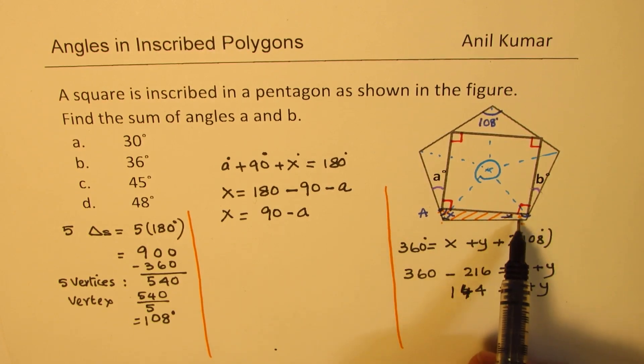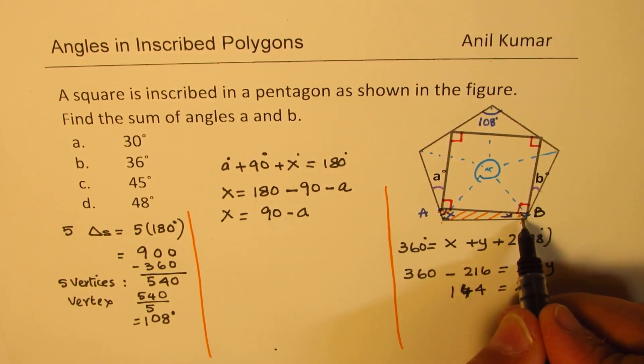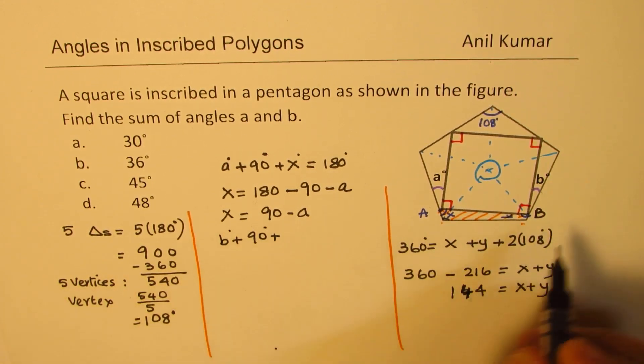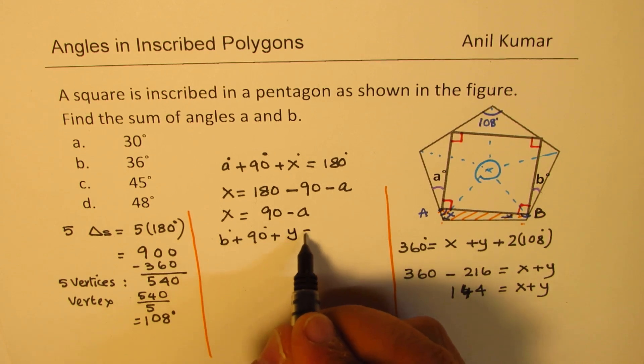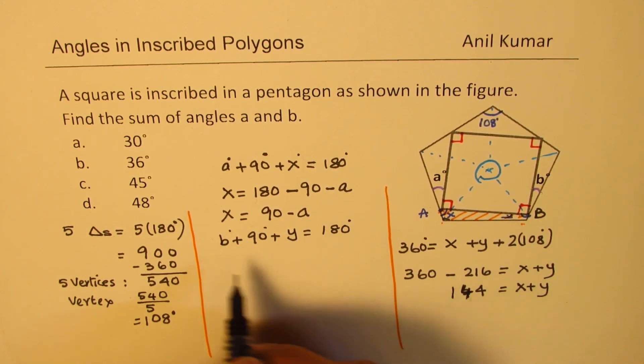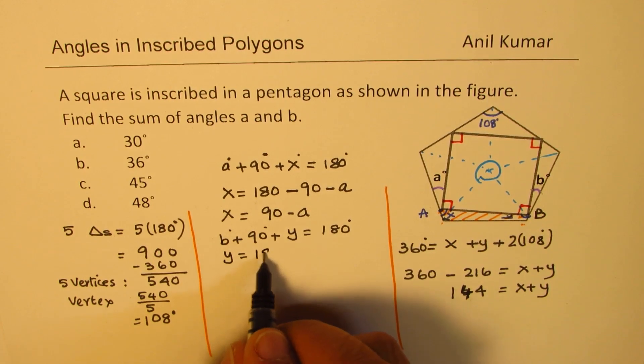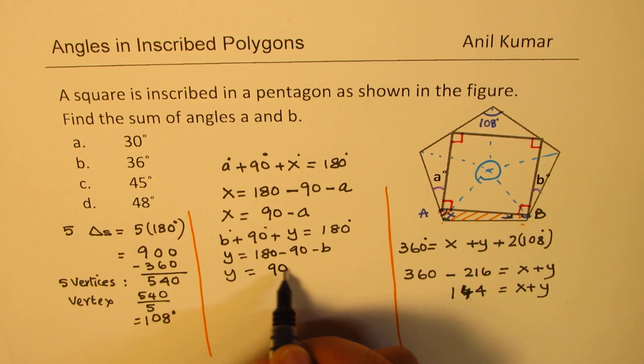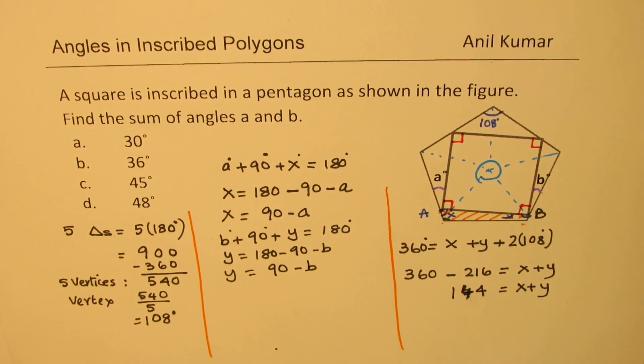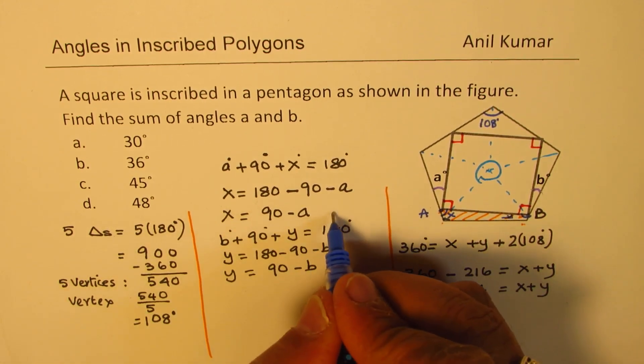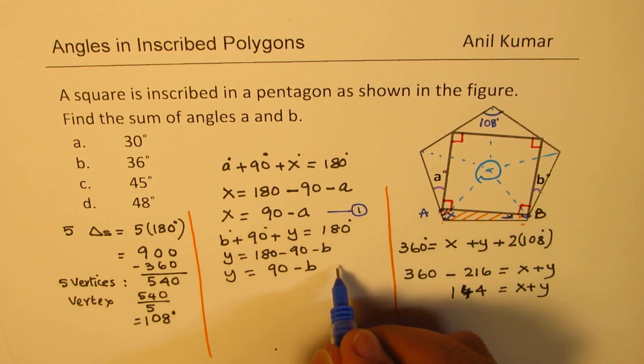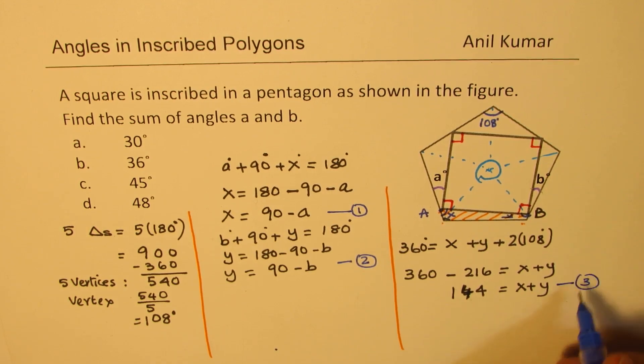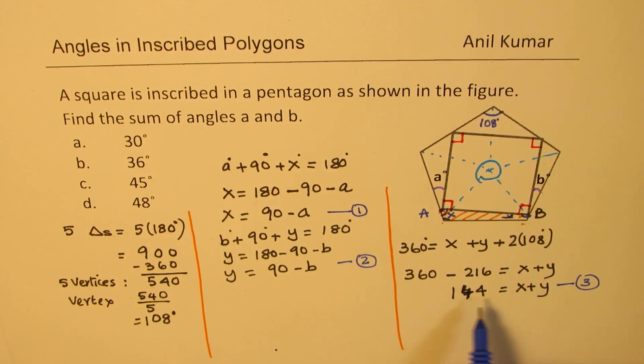Similarly, we can work on the other side, let's say point B. Now at this side, sum of B plus 90 degrees plus Y is also equals to 180 degrees. So from here we get Y equals 180 minus 90 minus B. So Y equals 90 minus B. Is that clear? So what we get here is a relation for X and Y in terms of A and B. And here we already have a relation relating X and Y with a number 144.